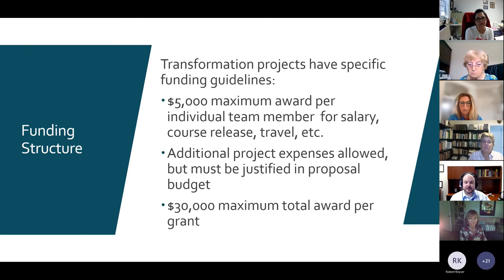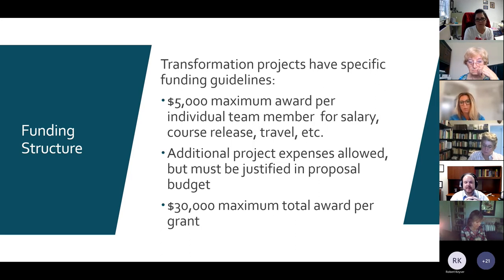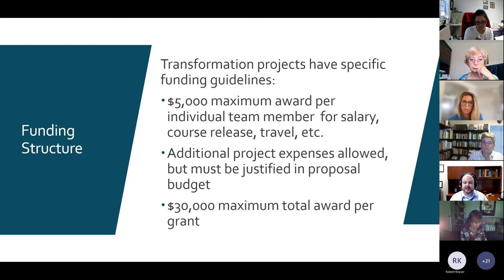Transformation grants are all about replacing very expensive materials with affordable materials — no cost, especially open educational resources, or low cost. They could be low cost homework solutions or low cost courseware in general, anything below $40 as the cost cap. Continuous improvement grants came out of that later. Transformation grants are specifically about transforming materials in your course from expensive commercial to affordable. The funding structure for transformation grants: because this is a big heavy lift — changing resources, course design, and sometimes agreements across an entire department — it is a $5,000 maximum award per individual team member for salary, course release, travel, etc.